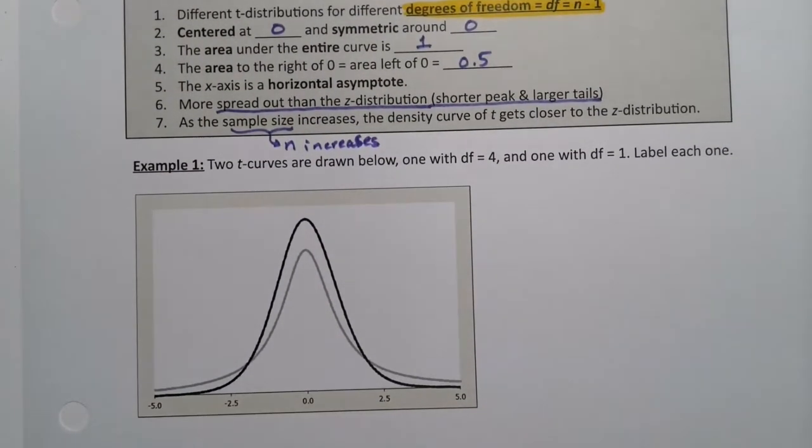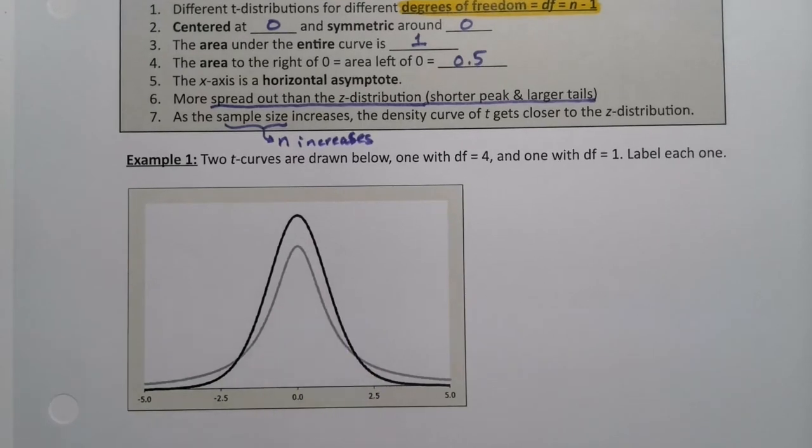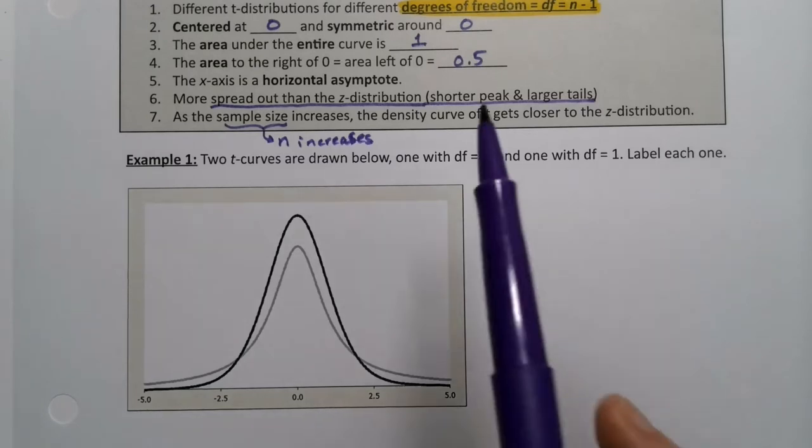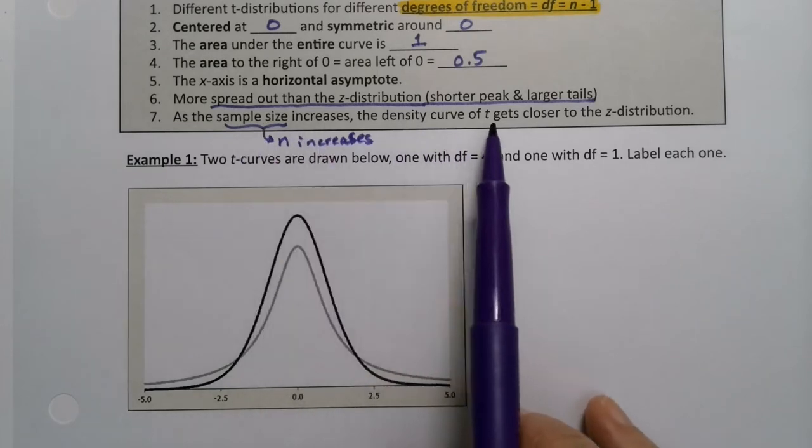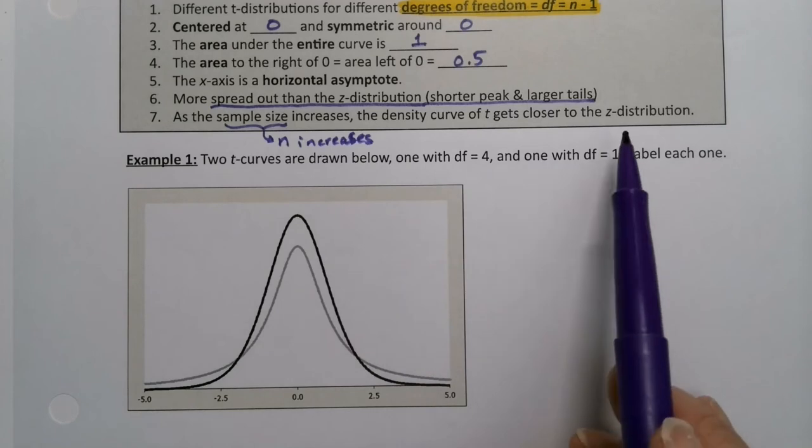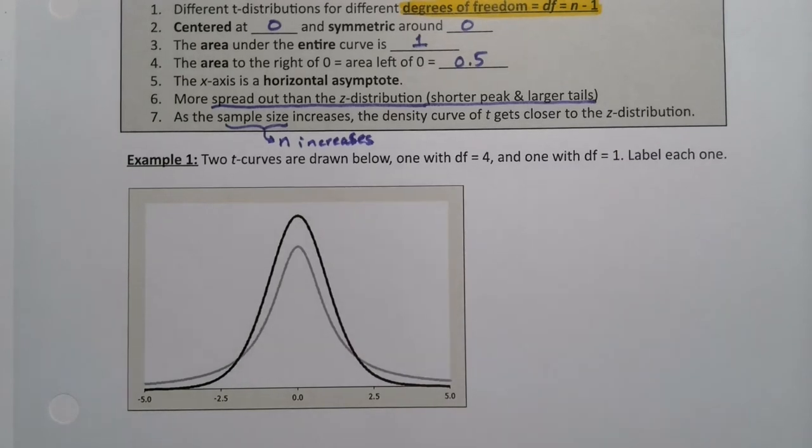Now let's put this together and see if this makes sense to us. If we have two t curves drawn, one of them has a degrees of freedom as four and one of them has degrees of freedom as one, which one is which? Well remember what this last part says. It says that as the sample size increases, the density curve of t gets closer and closer to the z curve.